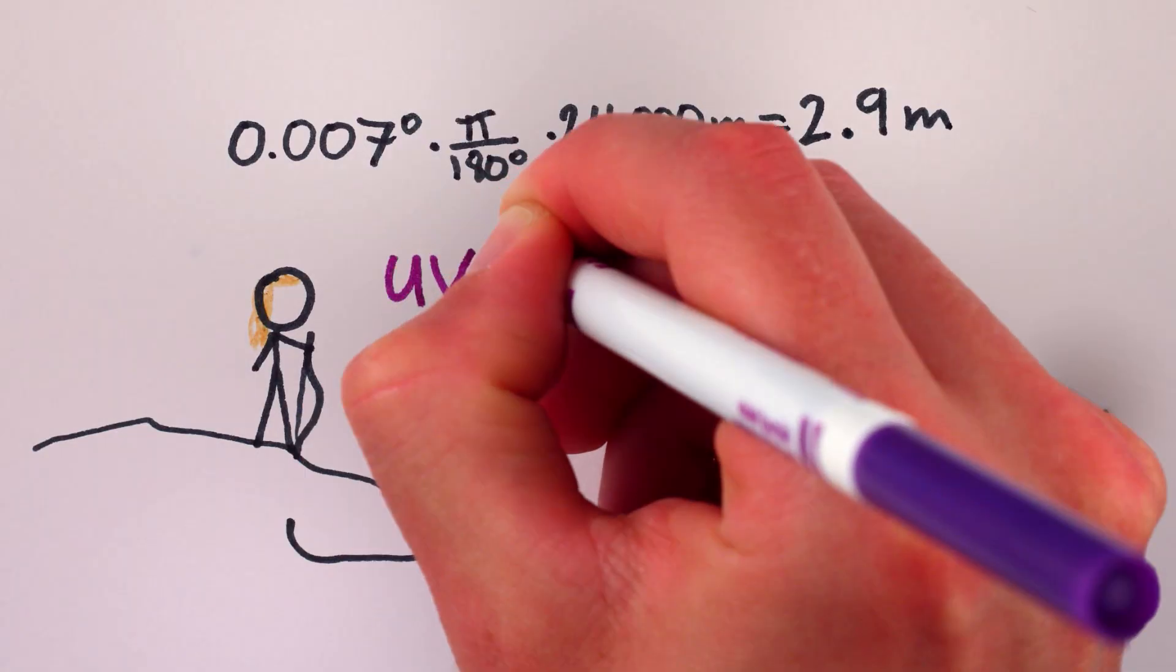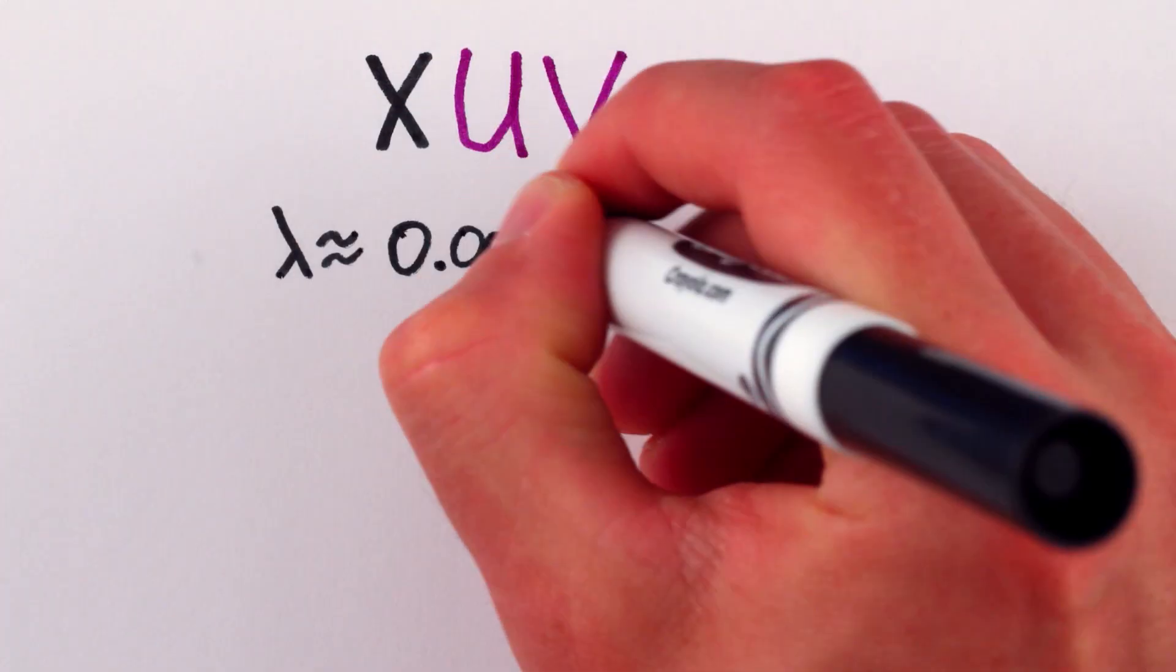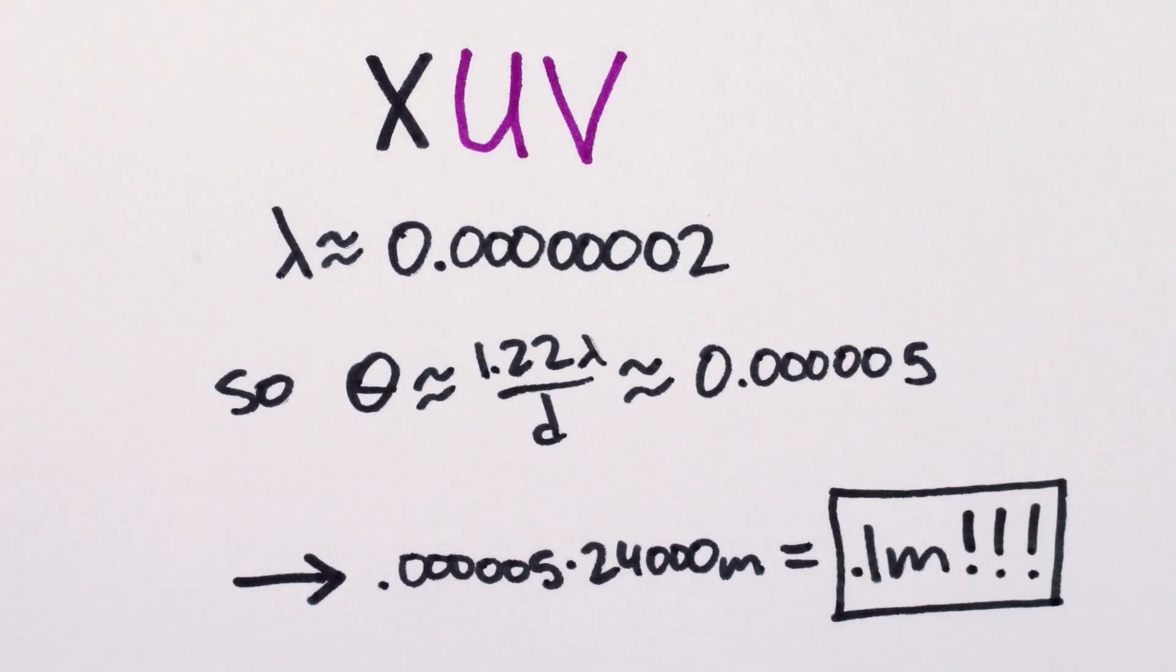Unless Legolas could see in ultraviolet. Shorter wavelength light diffracts less, so if he could see in the extreme UV, then he'd be able to distinguish objects 10 centimeters in size, almost enough to discern the height of a man.